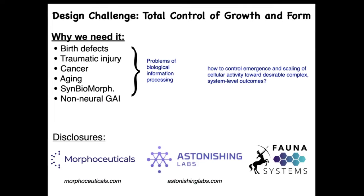The design challenge can be summed up as the total rational control of growth and form. If we had the ability to tell groups of cells what to build in terms of three-dimensional anatomical structure, many medical problems — in fact, most medical problems — would go away. Birth defects, regeneration after traumatic injury, cancer reprogramming, aging, degenerative disease. And not only biomedical problems, but also synthetic biomorphology — programming large-scale shape and structure — and even non-neuromorphic AI.